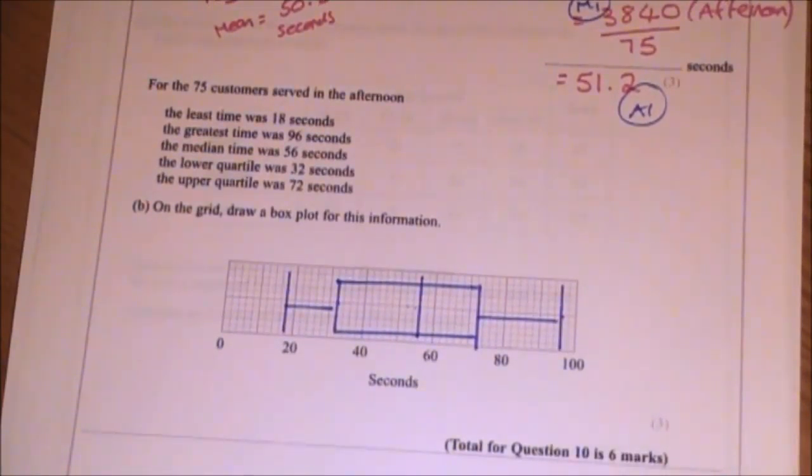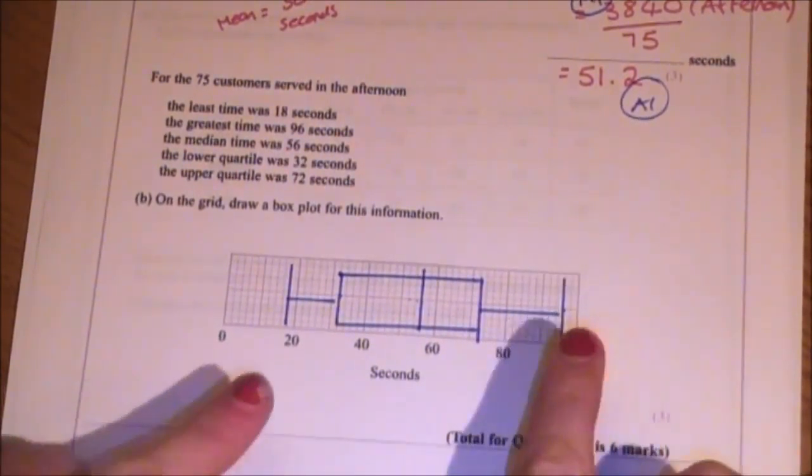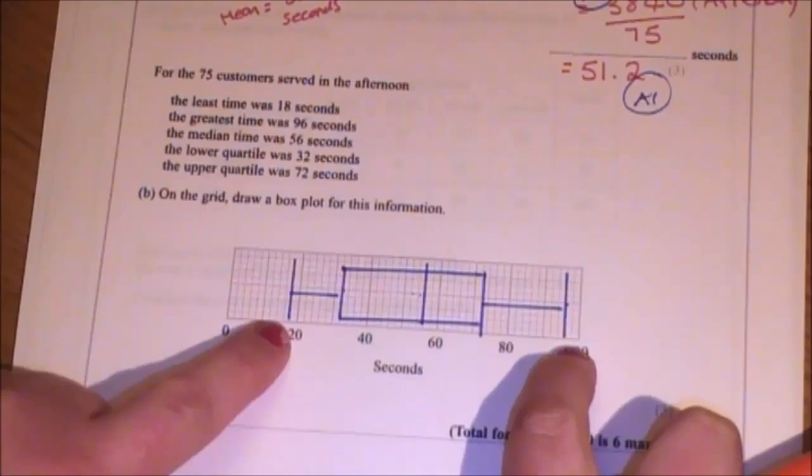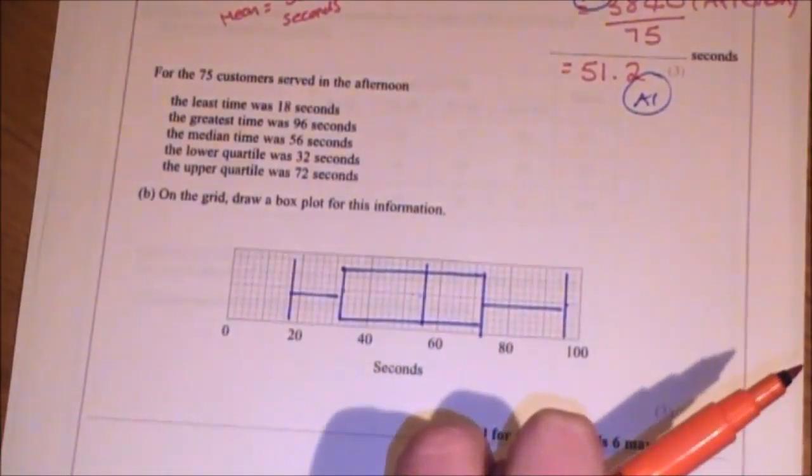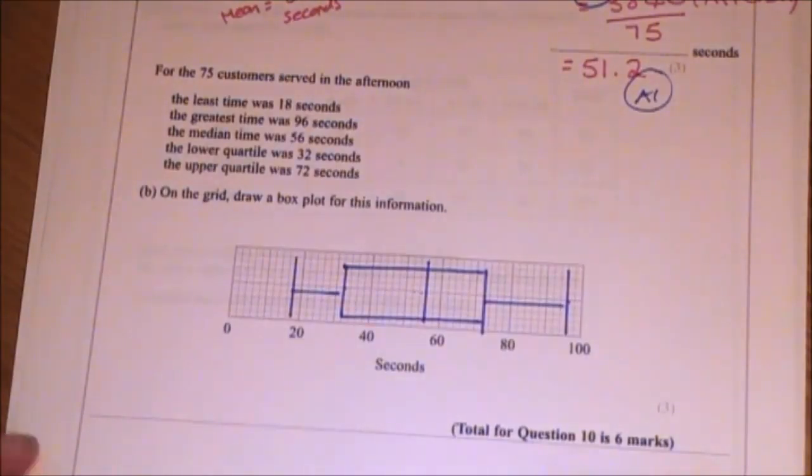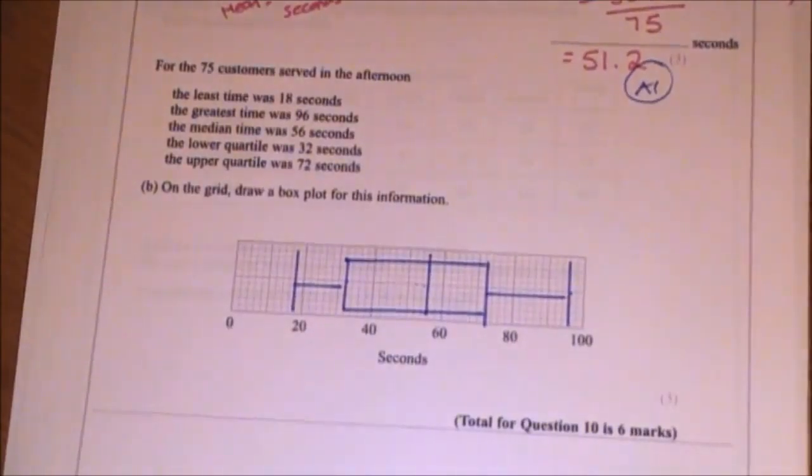And it's a three mark question. You get three marks if you've got all three aspects right. And by an aspect, I mean the maximum minimum is one aspect, quartiles is one aspect, median is another aspect. So you can get one, two or three marks based on whether or not you made any mistakes there.